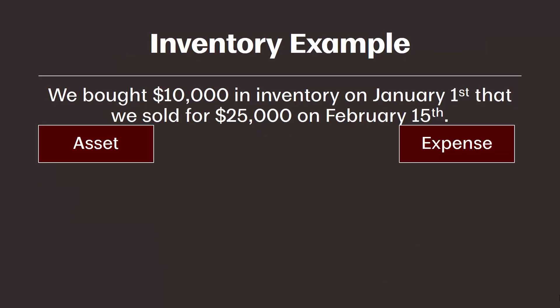Let's look at a specific example to make that concept clearer. Let's assume we bought inventory on January 1st that cost us ten thousand dollars. We were able to sell that inventory on February 15th for twenty-five thousand dollars. So we bought ten thousand dollars in inventory on January 1st that we sold for twenty-five thousand dollars on February 15th.